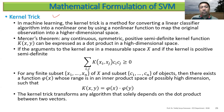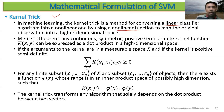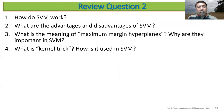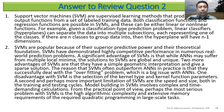In machine learning, the kernel trick is a method for converting a linear classifier into a nonlinear one by using a nonlinear function to map the original observations into a higher-dimensional space. Any continuous, symmetric, positive semi-definite function can be expressed as a dot product in a high-dimensional space. Essentially we try to convert nonlinear data into linear data so we can place a nice linear decision function.